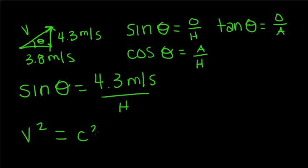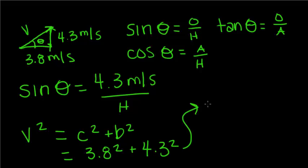v squared equals c squared plus b squared. We know c and b are 3.8 and 4.3, so we just plug these into this equation. This turns into v is equal to the square root. When you square these numbers and add them together, we get 32.93.